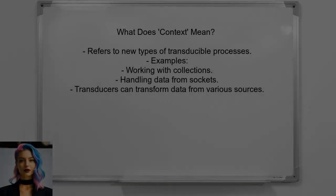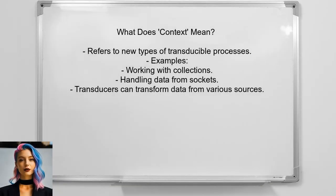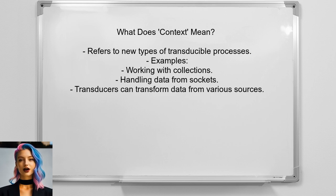Context in this discussion refers to implementing new types of transducible processes, such as those working with collections or asynchronous data streams. For instance, you could create a transducible process for handling data from a socket, allowing for flexible data transformations regardless of the source.